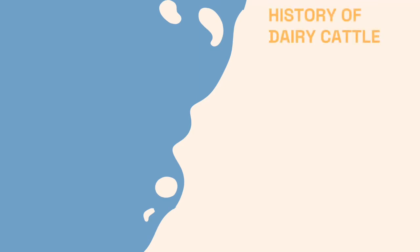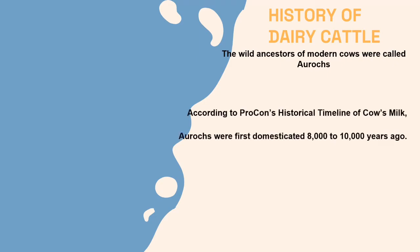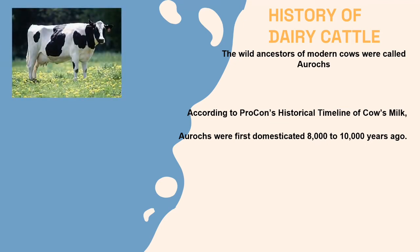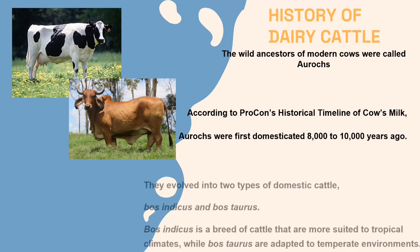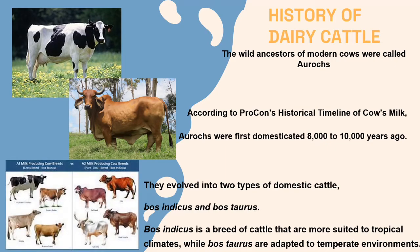Next is about the history of dairy cattle. The wild ancestors of modern cows were called aurochs. According to Procon's historical timeline of cow's milk, aurochs were first domesticated 8,000 to 10,000 years ago. They evolved into two types of domestic cattle: Bos indicus and Bos taurus.